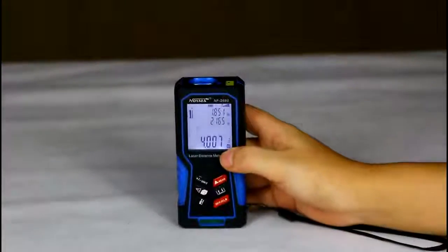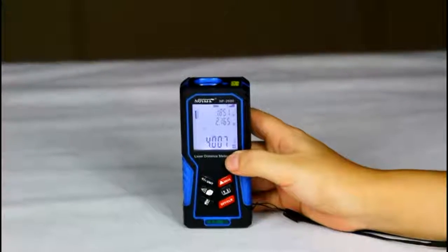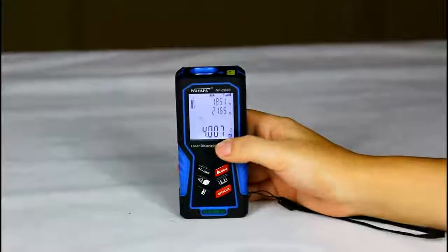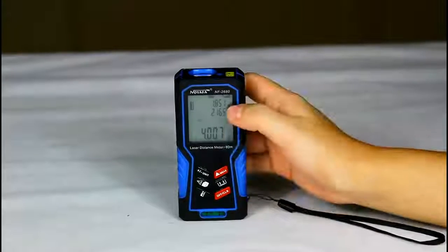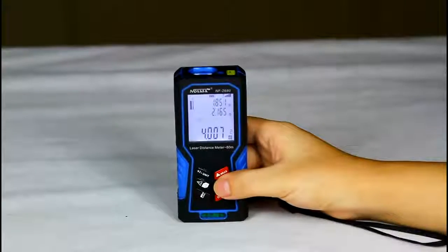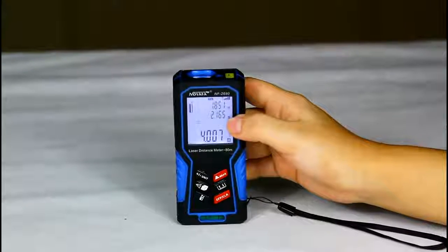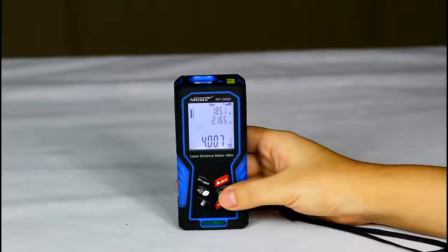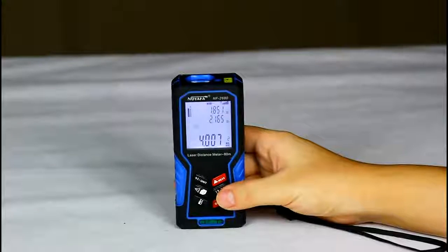Now, we can see the area from the screen visually. This is 4.0 square meters. The length is 1.8 meters. The width is 2.1 meters. The volume measurement is the same as the area measurement.